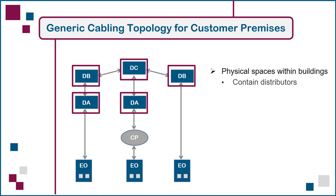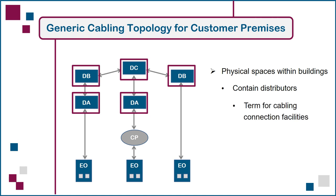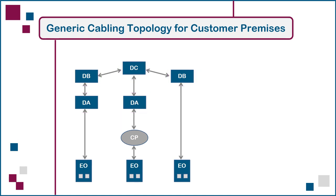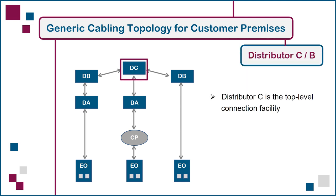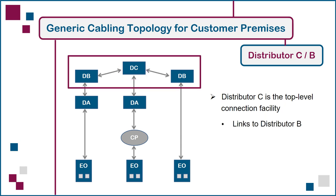These contain distributors, a term originally introduced in international standards publications to describe cabling connection facilities. If you have a campus, Distributor C would be the top-level connection facility in the main campus building, and it would have links to each Distributor B serving another building on the same campus. If you're not dealing with a campus, but instead, for example, a 100-storey office tower, you'd have the same setup, but the Distributor B's would be spread out vertically in your tower — for example, 20 floors apart, with Distributor C in the middle of the building on the 50th floor.